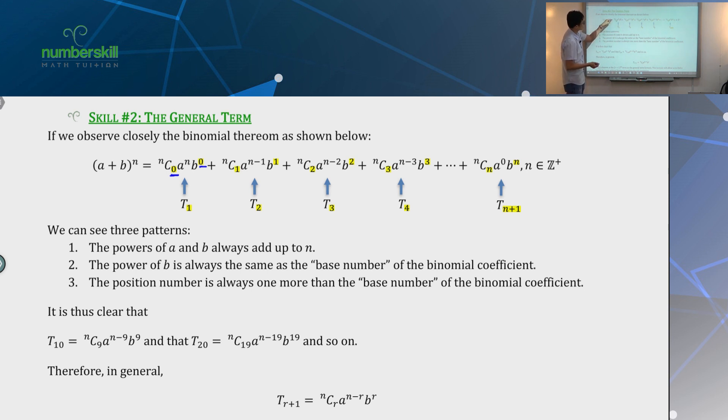Now, you see all the things that are important are all highlighted for you. You notice that the power of B is always related to the NcR, the number R. They share the same power. Like for example, the first term, Nc0, B power will be 0. Second term, Nc1, B power will be 1. Nc2, the B power will be 2. Nc3, the B power will be 3. So the term at the back will always have the same, the power will always be the same as the number below.